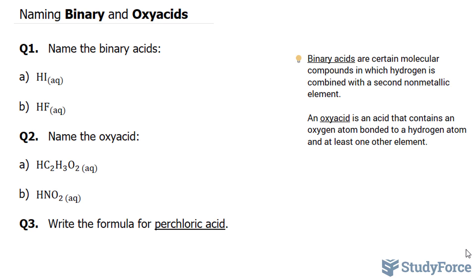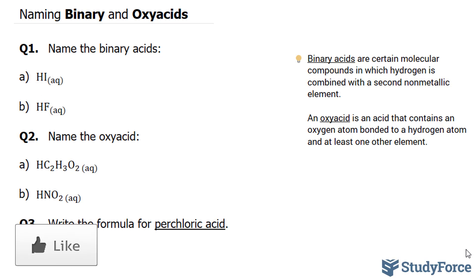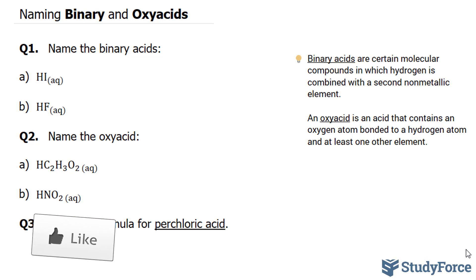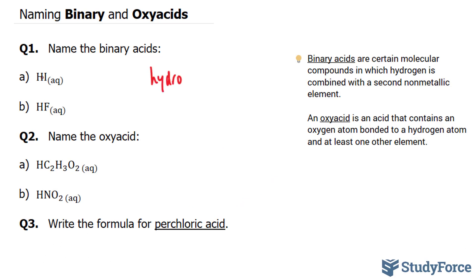In question one, they want us to name the binary acids. In A, we have HI. H represents hydrogen, I represents iodine. The way you name binary acids is you first write down 'hydro,' and then the base of the second element — which in our case is iodine — so 'hydro,' 'iode,' the base of the name, and then you write down IC. This is pronounced hydroiodic acid.